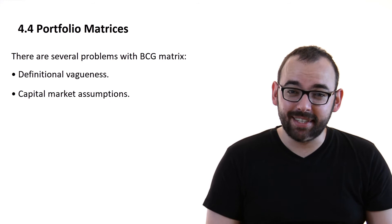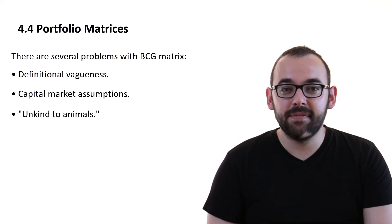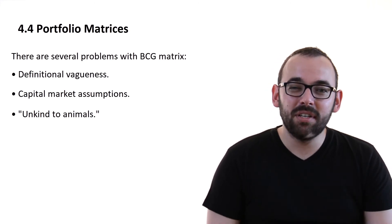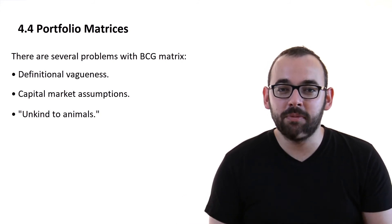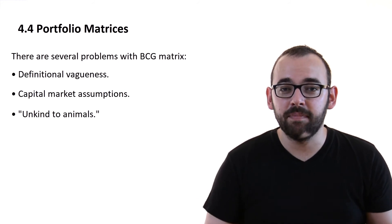The BCG matrix is kind of unkind to animals. What does that mean? You say that you have certain cash cows and you say that you have certain dogs, which are companies from which you are trying to only take cash and invest as little into them as possible because they are not going to be successful in the future.